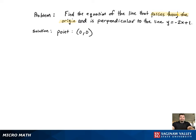The next thing we can see is that our line is perpendicular to the line y equals negative 2x plus 1. That means we can find the slope.